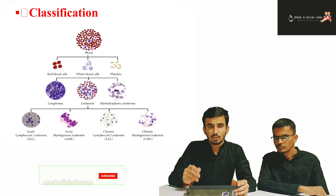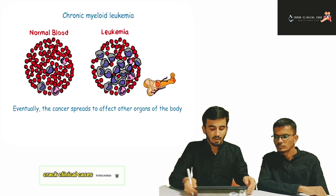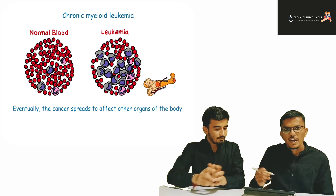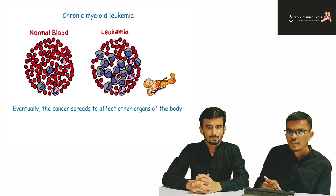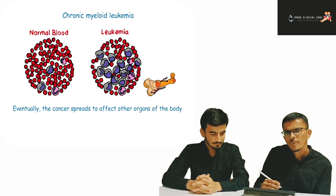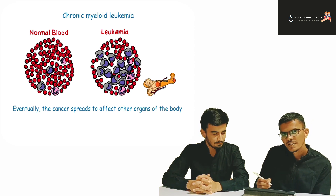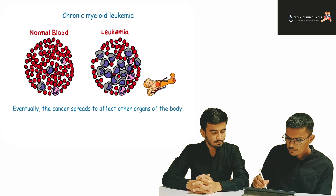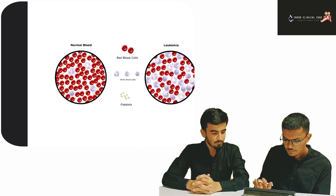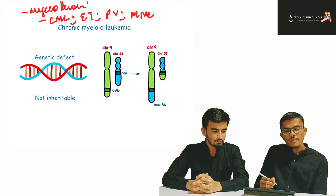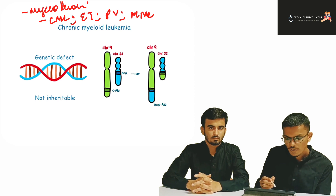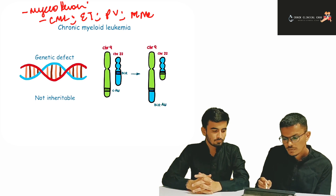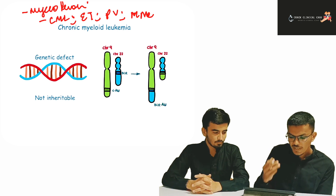CML is a myeloproliferative disorder of the hematopoietic stem cell, characterized by increase in myeloid cells and the Philadelphia chromosome. The increase in myeloid precursors is what makes CML a unique cancer. CML falls under myeloproliferative disorders, which also include essential thrombocytosis, polycythemia vera, and myelofibrosis with myeloid metaplasia.